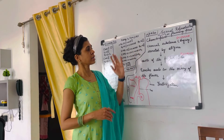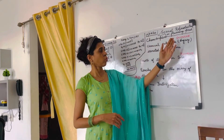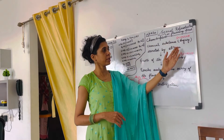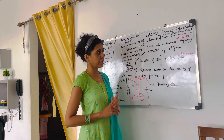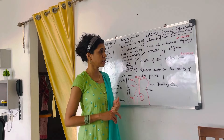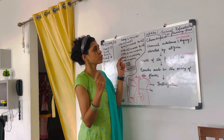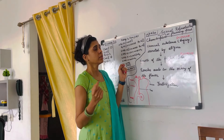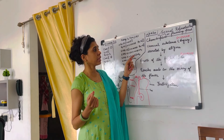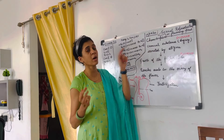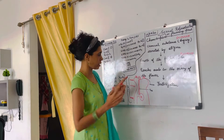Let us understand which is the stimulus and which is the response in this entire flowchart. The chemical substance — the sugary substance secreted by the stigma of the flower — is the stimulus.